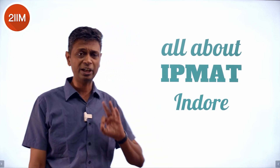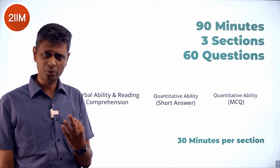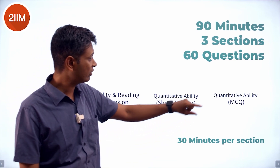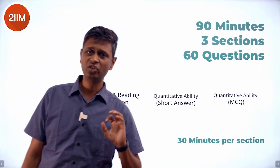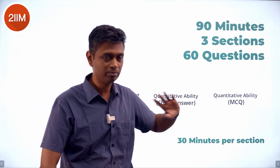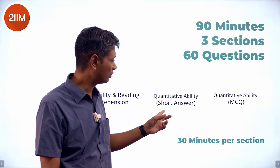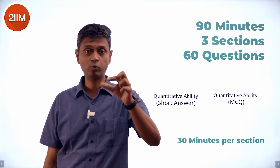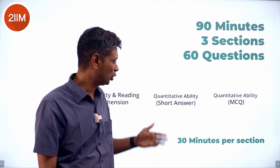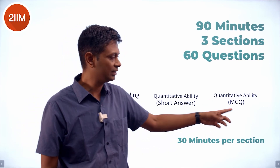We're going to take the IP Matter indoor exam and break it down completely, step by step in this video. There are three sections to it: Verbal Ability and Reading Comprehension, Quantitative Ability Short Answer, and Quantitative Ability MCQ. Short answer is the kind of answer you put into a box without choices. MCQ is multiple choice questions. This is not descriptive — instead of clicking C, you put down an answer like 20. It's still objective, just short answer versus multiple choice question.